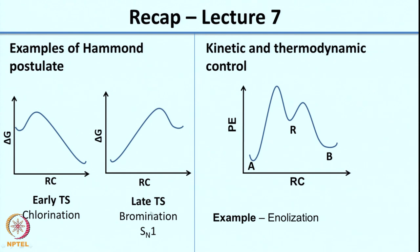We also looked at the SN1 reaction where you can see Hammond's postulate, because the reaction is endothermic - that is the formation of the carbocation - and how with the stability of the carbocation the transition state keeps moving towards the left. So it goes from a late transition state and slowly starts moving away from the product.